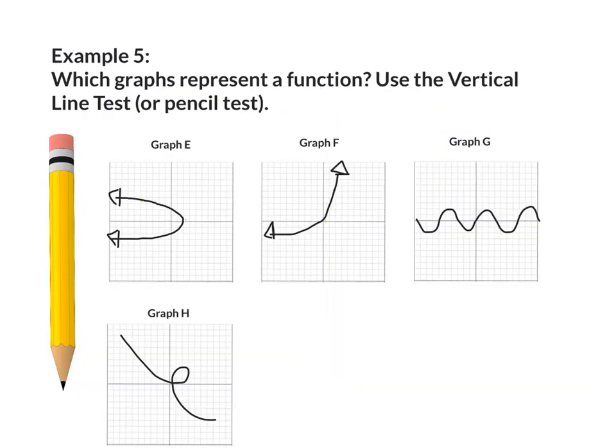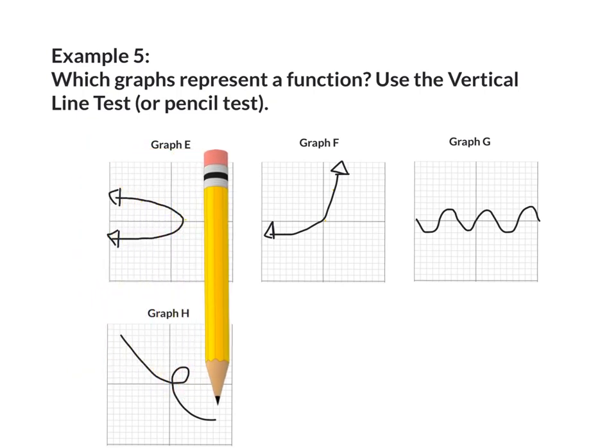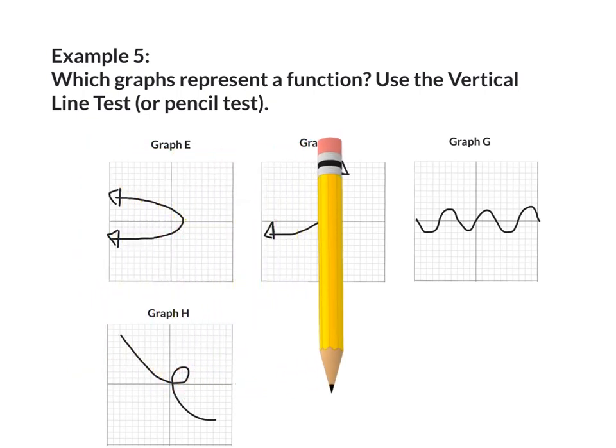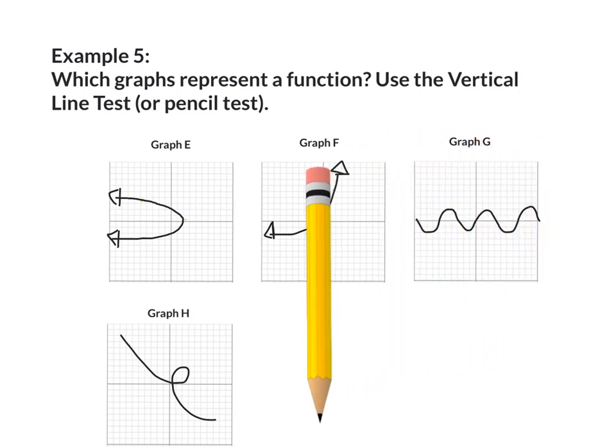Example 5, which graphs represent a function? Use a vertical line test or pencil test. You're going to take your pencil and you're going to hold it vertically. You slide it across the graph. If your pencil touches the graph in more than one place at the same time, it is not a function.